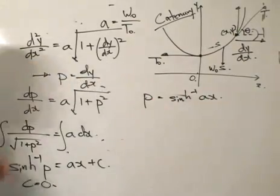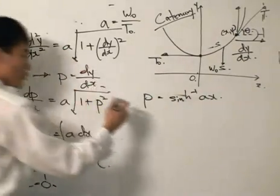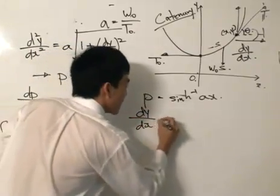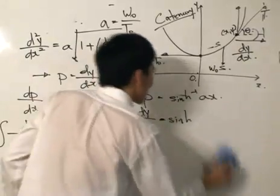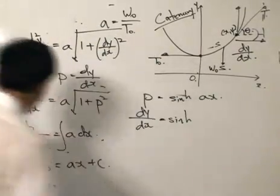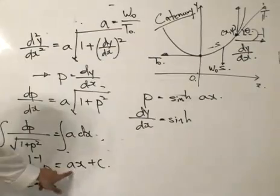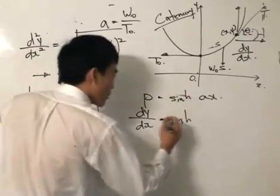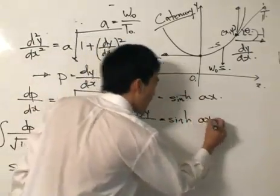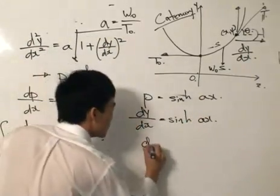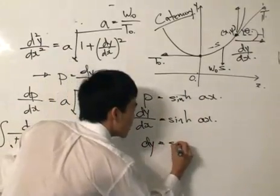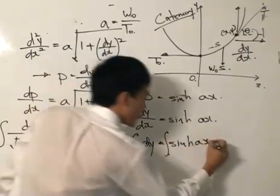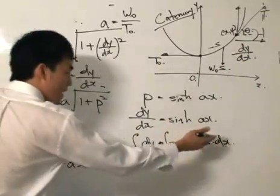P, we need to replace with the initial variable dy/dx. Bringing it over to the other side, it's sinh. Now we write, replacing P with dy/dx: dy equals sinh(AX)dx. Now I can integrate sinh(AX)dx. I'll get Y equals 1 over A times cosh(AX) plus an arbitrary constant.